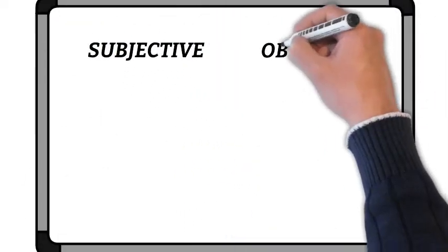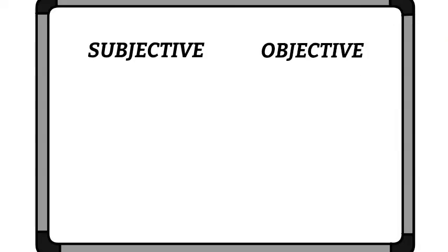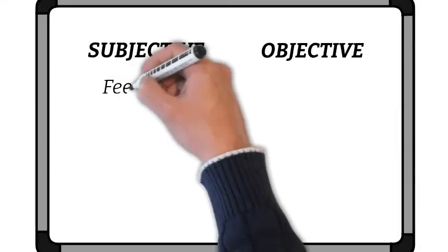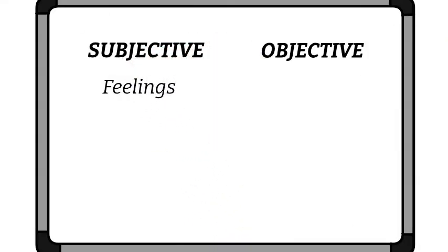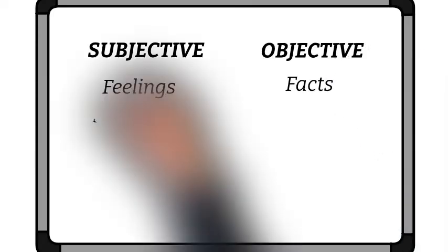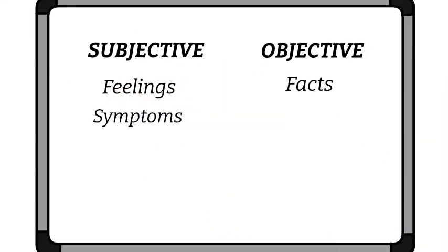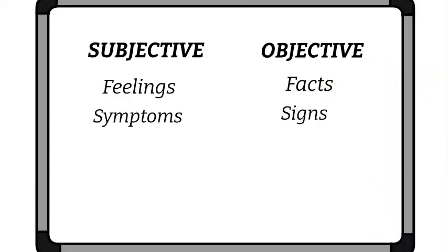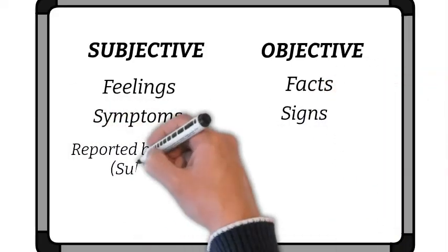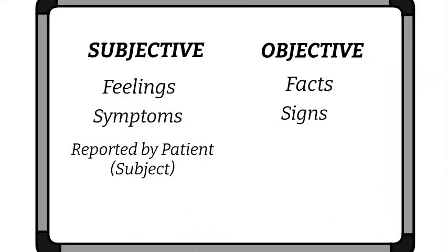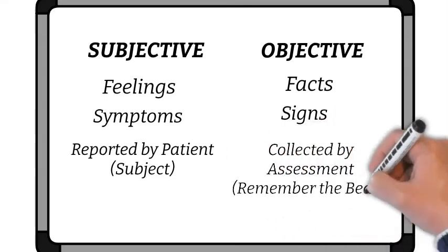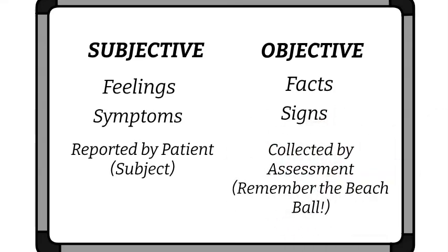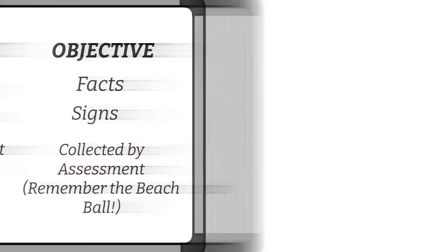For a quick recap: subjective is about feelings, while objective is about facts. Subjective has to do with symptoms, where objective has to do with signs. Subjective has to be reported by the patient, or subject, whereas objective has to be collected by assessment. Don't forget the beach ball.